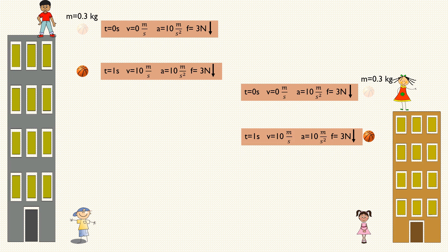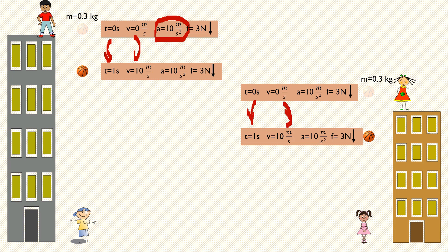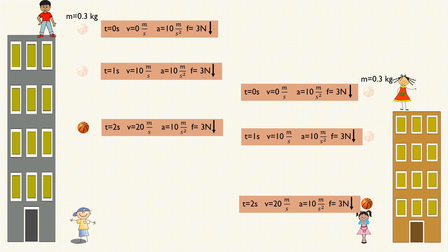After one second, the velocity increases by 10 m/s — that's the meaning of acceleration, the rate of increase in velocity. The weight and acceleration do not change. After another second (at time two), the velocity becomes 20 m/s, with acceleration and force remaining constant. The ball from the lower building hits the student after two seconds; the ball from the taller building takes one more second.